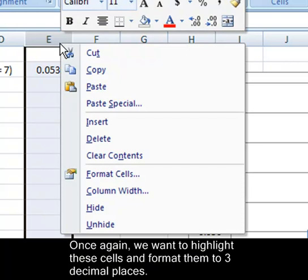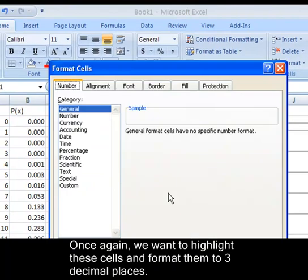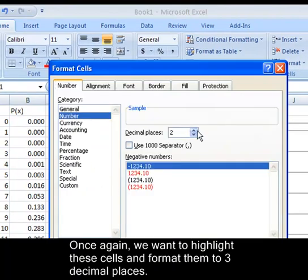Once again, we want to highlight these cells, format them to three decimal places.